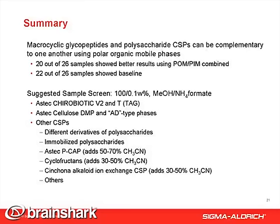To summarize the results: macrocyclic glycopeptide and polysaccharide chiral stationary phases can be complementary to one another using polar organic mobile phases. Besides a normal phase screen, a second screen system is suggested using other popular chiral stationary phases like Chirobiotic V2, Chirobiotic T, OD-type columns, and other commercially available stationary phases. Together, they may increase your success rate up to 95%.